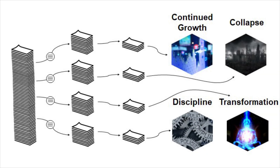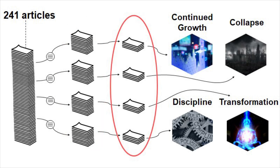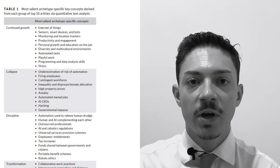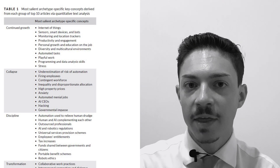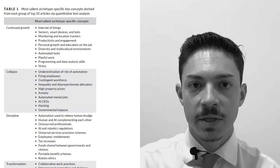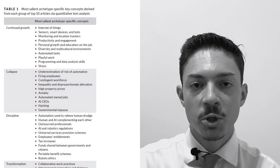The algorithm classified the documents into four piles and identified the 10 most archetype-specific documents in each pile, from which we created scenario narratives. To support narrative creation, we also generated a table of the most salient archetype-specific concepts — those appearing exclusively in one scenario. For example, in continued growth the top concepts are smart devices and internet of things, while in collapse the top concepts are underestimation of the risk of automation and unemployment. From this table it was straightforward to create scenario narratives, which we provide at the end of the article.